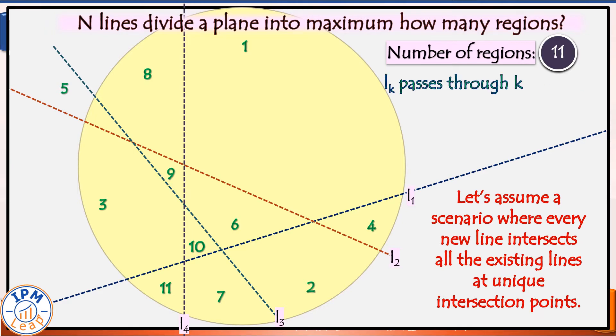Are you able to notice a pattern here? Line number K passes through K regions and divides each into two parts, thus increasing K regions.